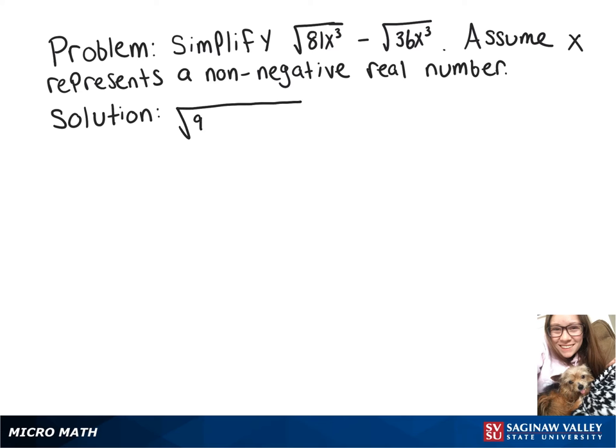Our first one we can break up into the square root of 9 times 9 times x squared times x. And then our other one we can turn into the square root of 6 times 6 times x squared times x.